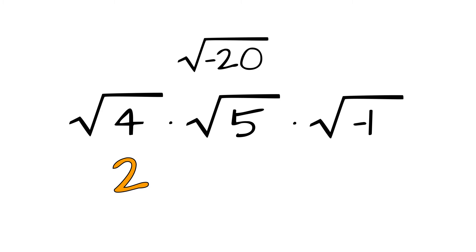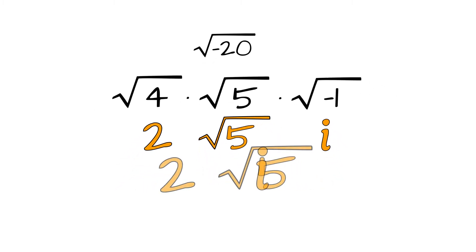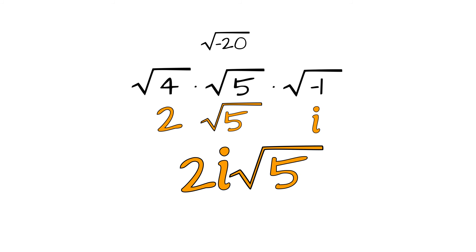The square root of 5 is the square root of 5. And the square root of negative 1 is i. Now we rewrite our answer as 2i square roots of 5.